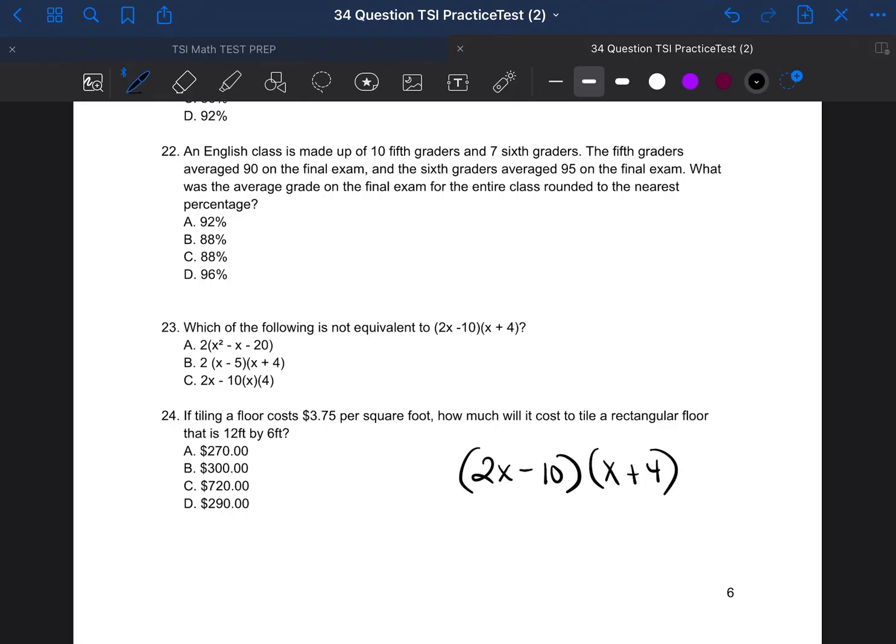So what we're going to do is because they're side by side parentheses, they're binomials, meaning there's two terms in each. We're going to go ahead and we're going to multiply binomials. What that means is we take each term and we multiply it by everything in the second parentheses. And then we take the second term and multiply it by everything in the second parentheses. So let's go ahead and get started.